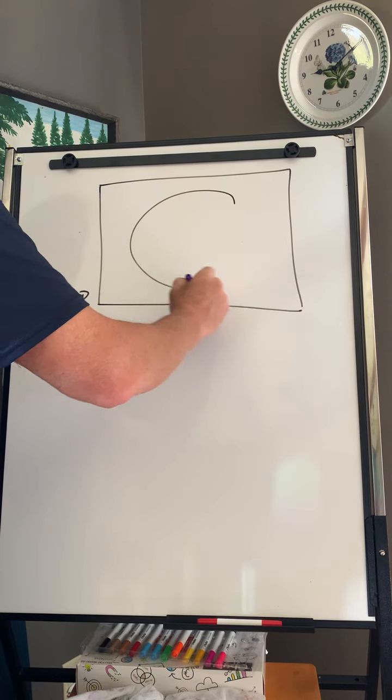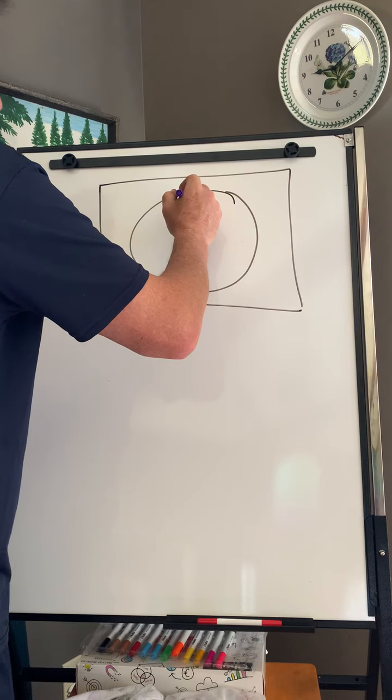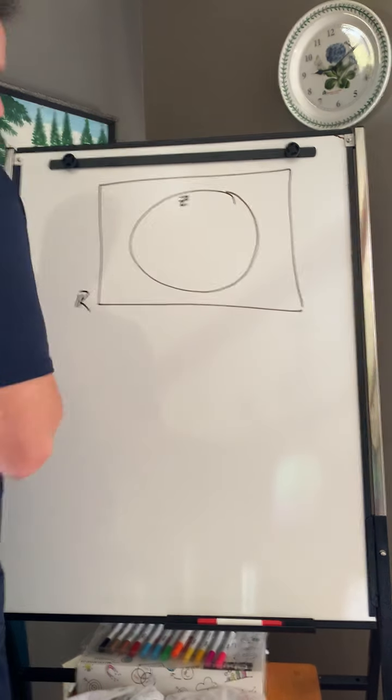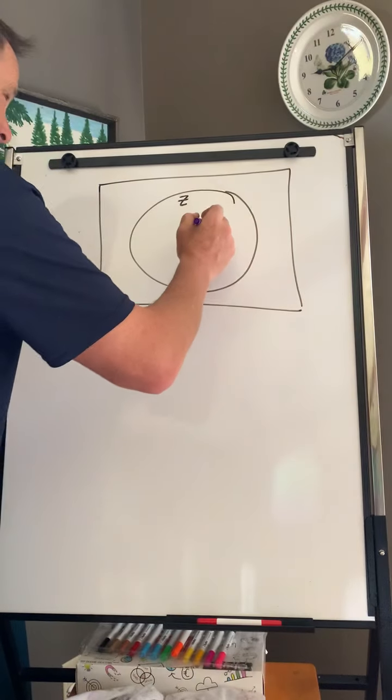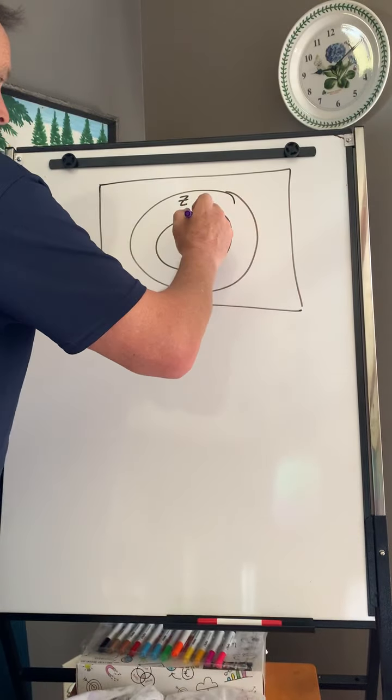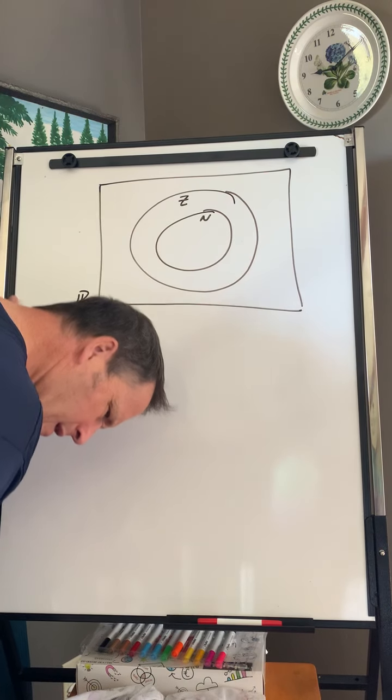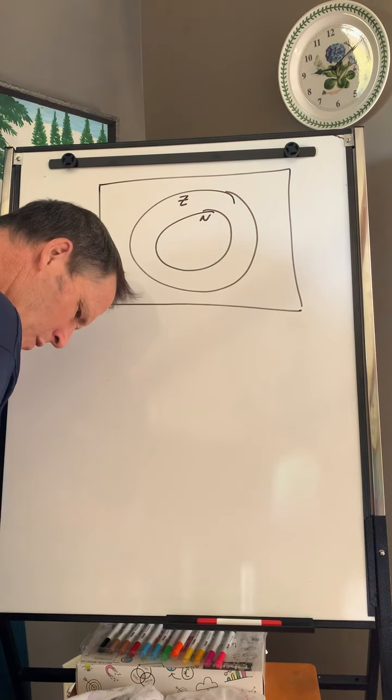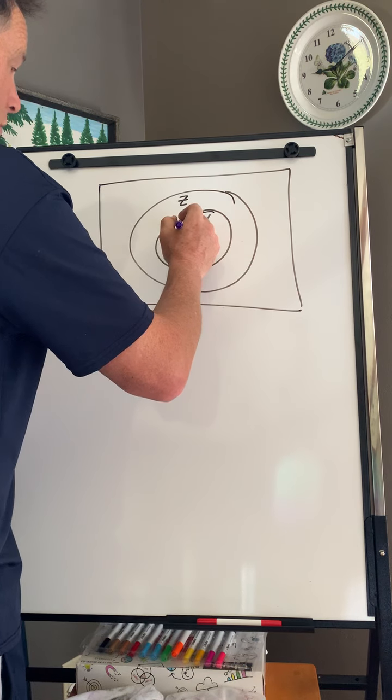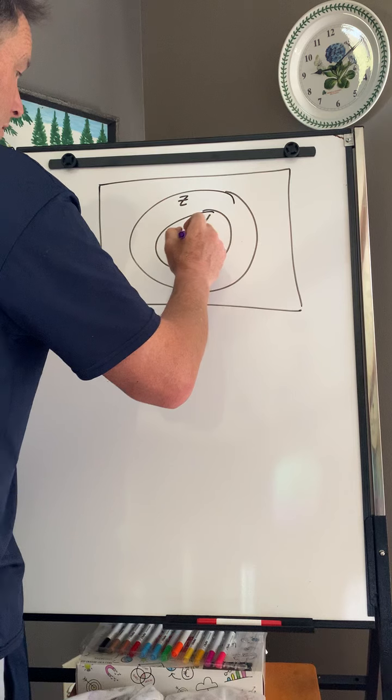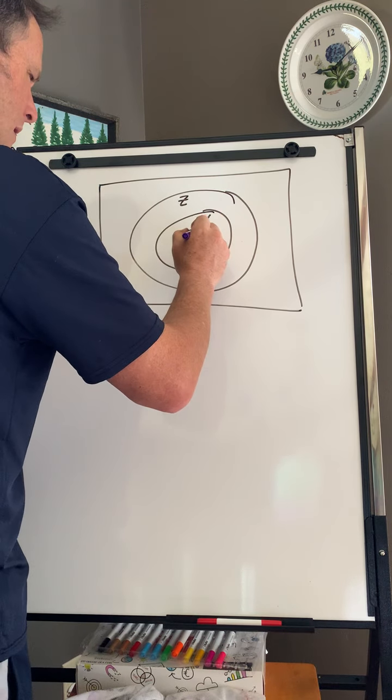And within that universal set, we have integers. And then, within that, we get natural numbers. And then, within that, we have positive integers.